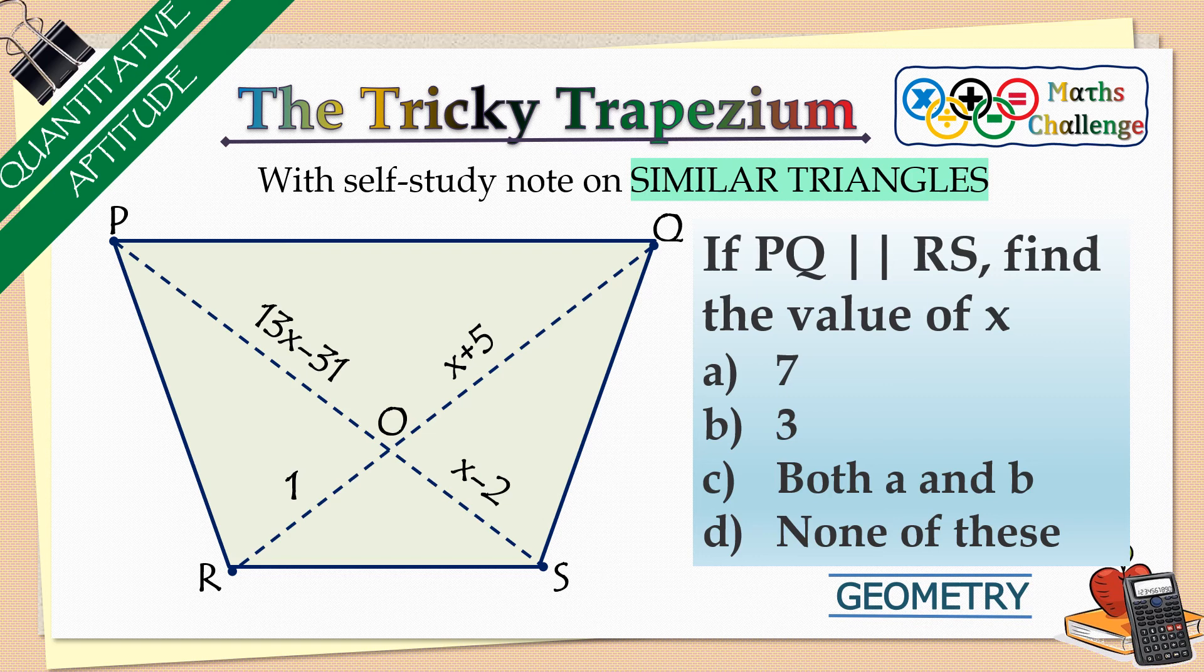So the top and the bottom side of this trapezium are parallel. We can see two diagonals which are intersecting at, let's say, point O. The lengths of these diagonals till their intersection point are given in terms of x and we need to find x.